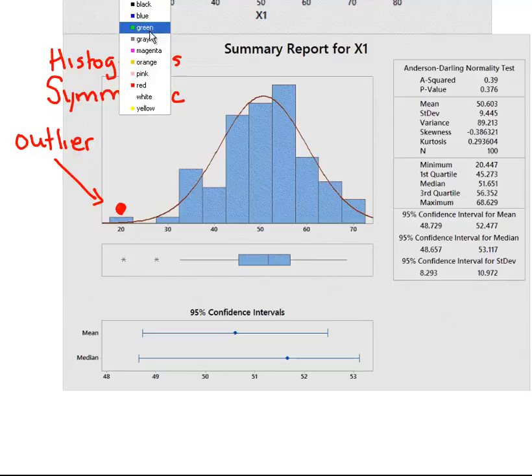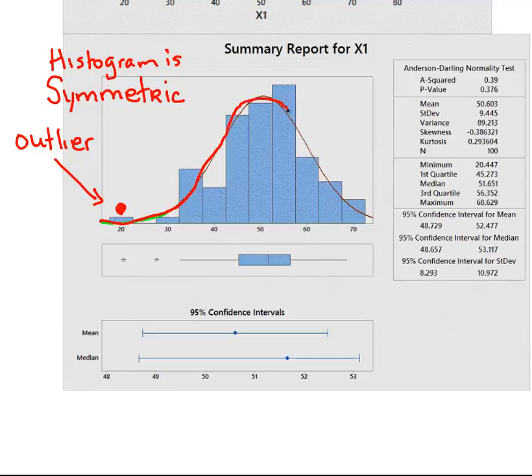Little bit of skew, but that's going to happen. Essentially what we seem to have here is an outlier down here. So just down here, we seem to have an outlier or something like that. But overall, the histogram is symmetric.